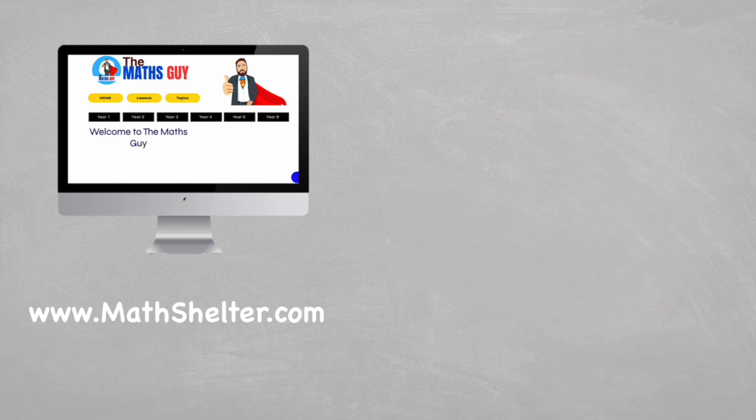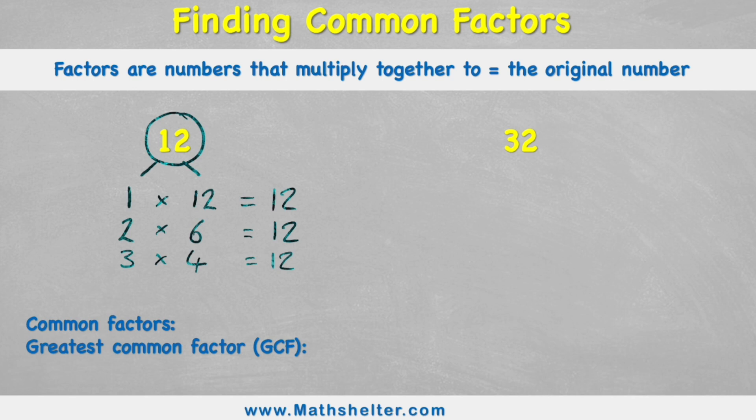So these are my factors of 12. I have 6 of them: the number 1, number 12, 2, 6, 3, and 4. So if I was only asked to find the factors of 12 I would have finished my question. But I'm not, I'm looking for common factors between 12 and 32, so now I need to find the factors of 32.